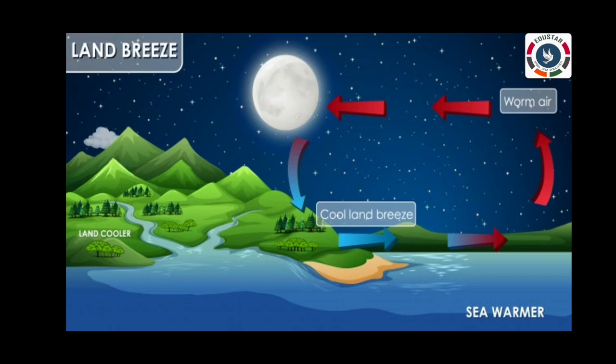At night, land cools down much faster than the sea. As a result, the air above the land also cools down. The air above the sea is still warmer. This warm air rises up and the cool air from the land rushes towards the sea to take its place. This wind that blows from land towards the sea at night is called land breeze.